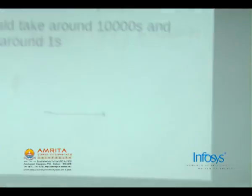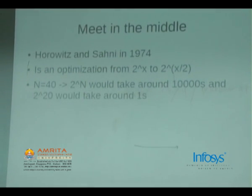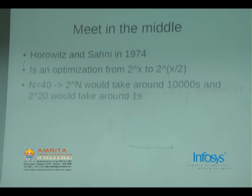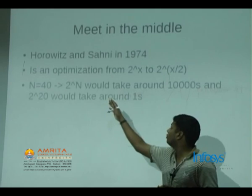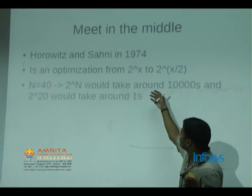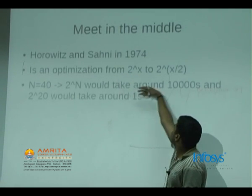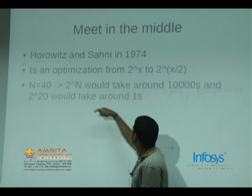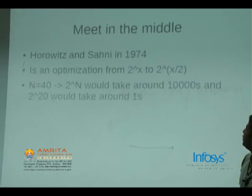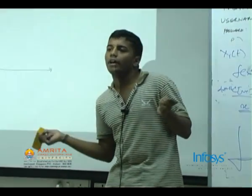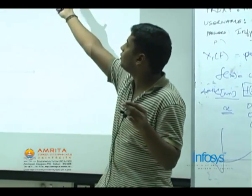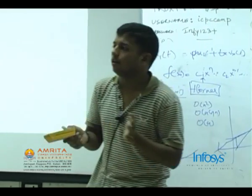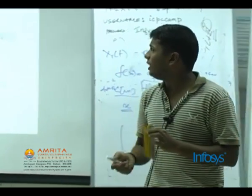Another technique, which is actually advanced and was probably used in world finals too, is meet in the middle. It typically appears as a subroutine in hard problems. Discovered by Horowitz and Sahni in 1974, it is an optimization which removes a complexity term 2^n and converts it into 2^(n/2). To understand how big an optimization this is: if n equals 40, 2^40 would take around 10,000 seconds, but if n equals 20 it takes around 1 second. By reducing an n=40 problem using meet in the middle, you reduce its time complexity in a very drastic manner.